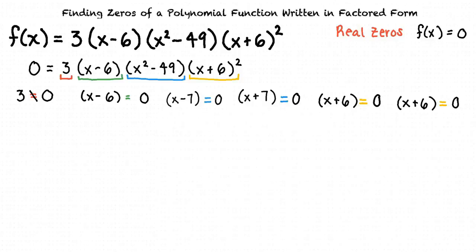Let's start with x - 6 = 0. If we add 6 to both sides, the negative 6 and the positive 6 cancel out, resulting in x = 6. This is our first real zero.